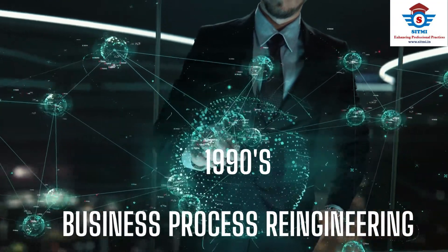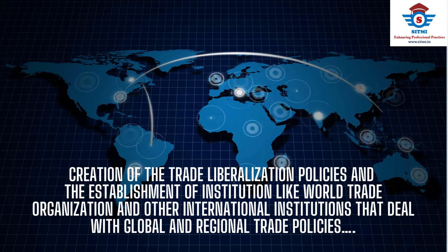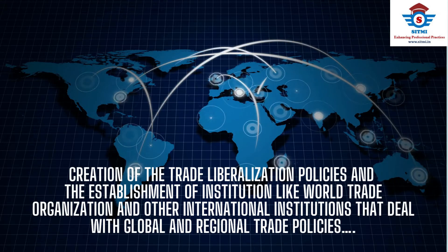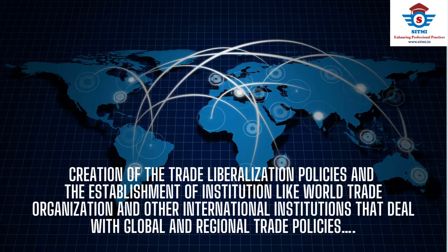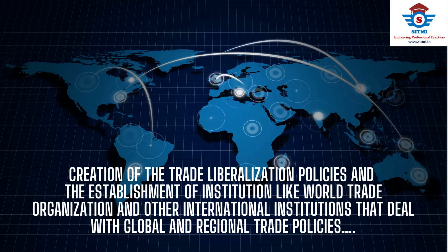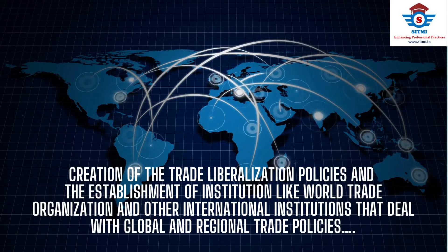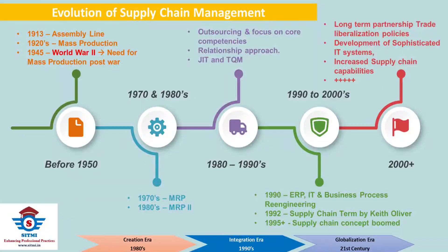The current era is also referred to as the globalization era. This era starts with the creation of trade liberalization policies and the establishment of institutions like the World Trade Organization and other international institutions that deal with global and regional trade policies. In this section, we have combined all the historical happenings in one timeline, starting from the assembly line all the way to the era of globalization.